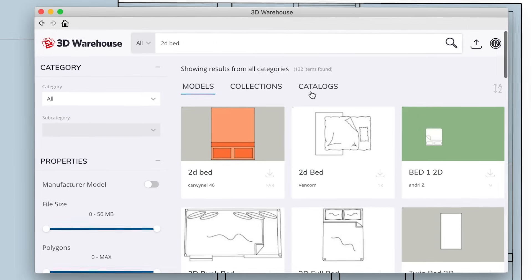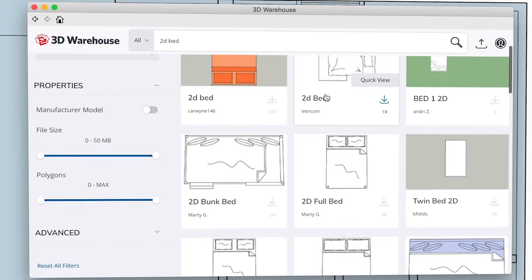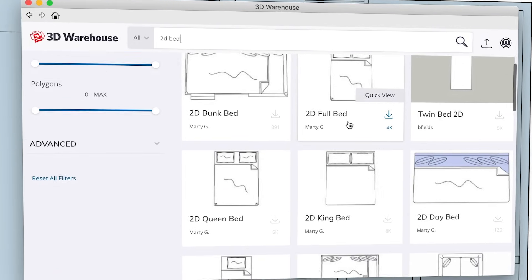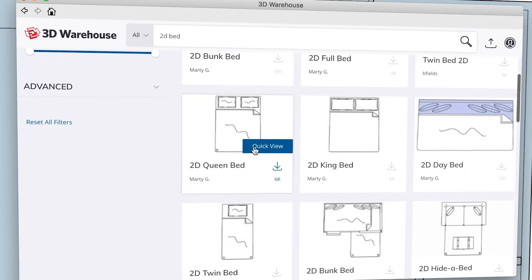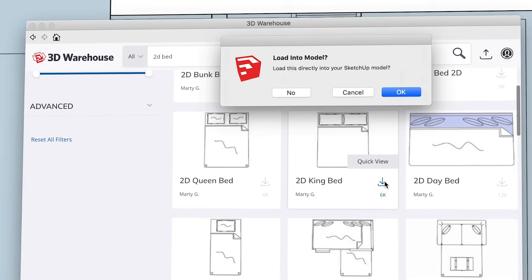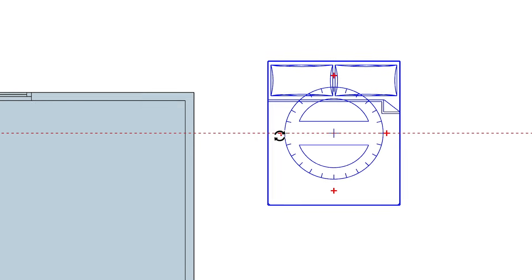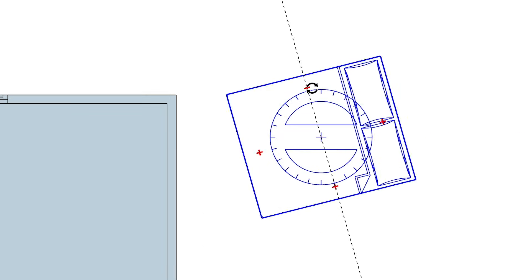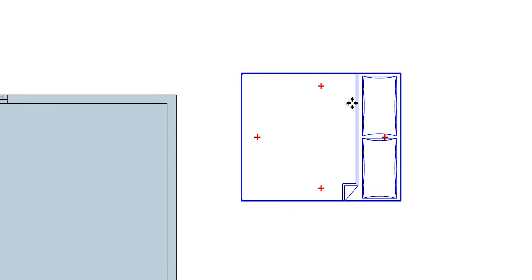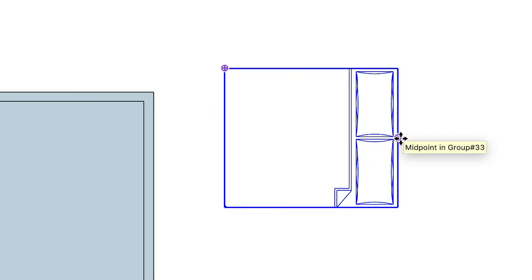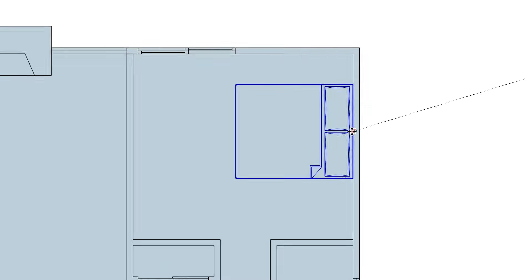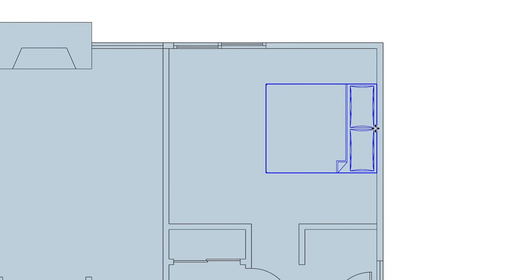You'll get a bunch of results. Some of them won't be what you're looking for, but there should be plenty of usable options as well. When you've found a component you like, click on the Download button and agree to download it directly into your model. When it finishes downloading, click anywhere in white space to set it down. Remember, if the component isn't oriented properly, you can rotate it or flip it. Move it into place with the Move tool, and remember to click on a precise point of the component, and then click on a precise point in the floor plan to match things up perfectly.